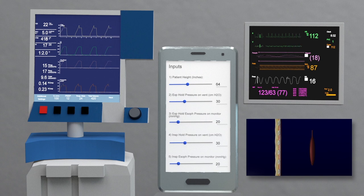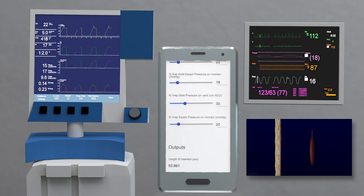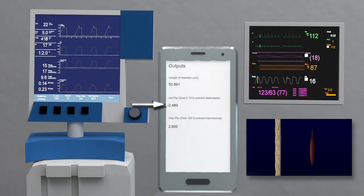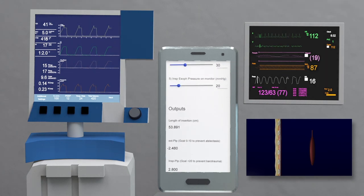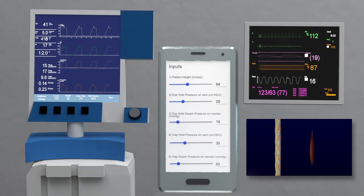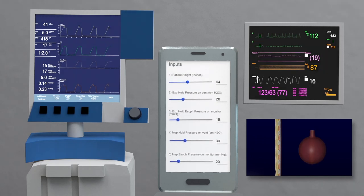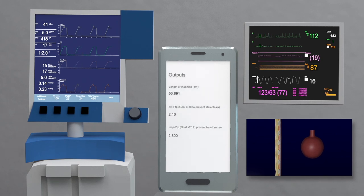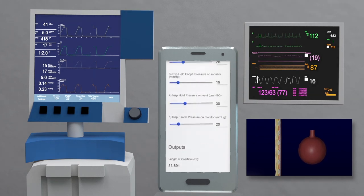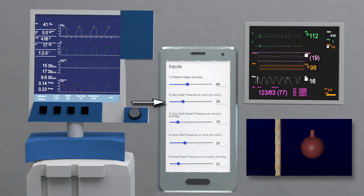We're going to do this by pressing the EXP hold button on the ventilator and setting slider 2 on the calculator to the pressure measured by the ventilator and slider 3 to the transduced esophageal pressure shown on the bedside monitor. Note in this case the end expiratory transpulmonary pressure is still less than zero. Increase PEEP in increments of 2 and repeat measurements until end expiratory transpulmonary pressure is between 0 and 10. In this case the minimum PEEP required is 28.